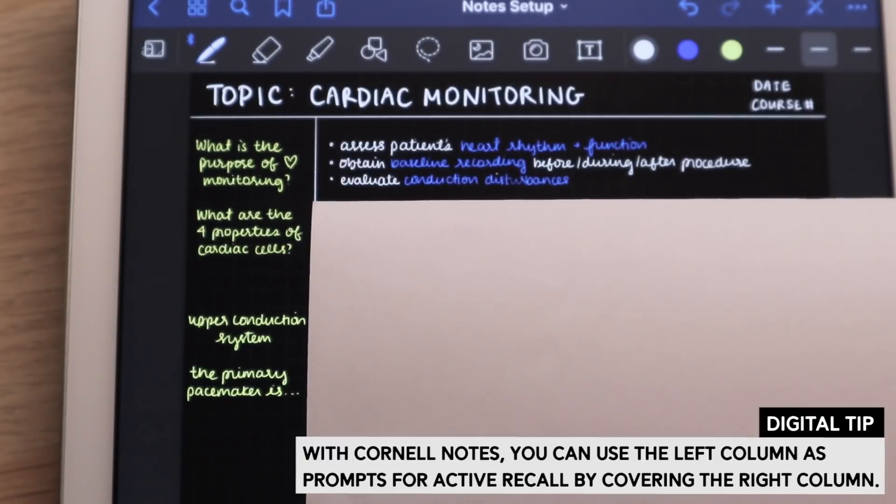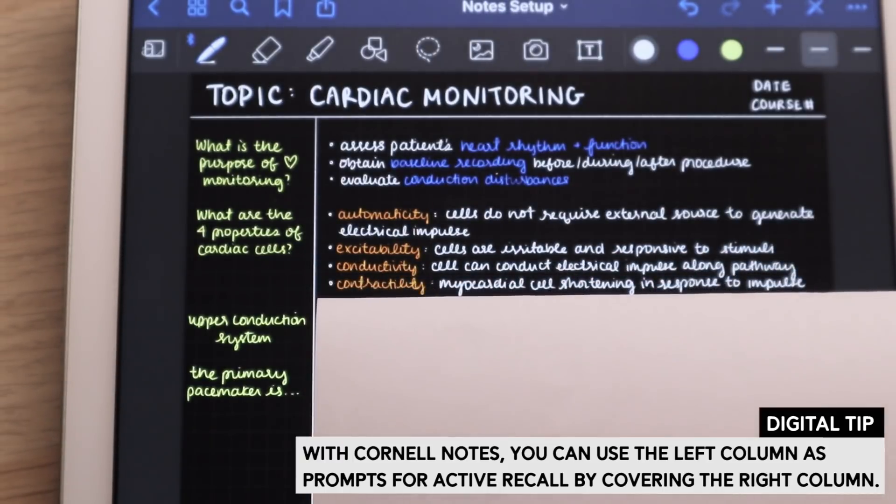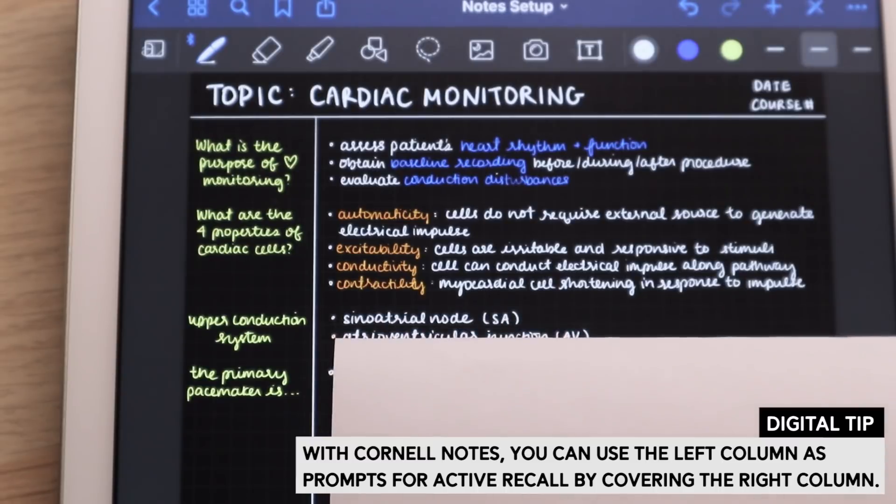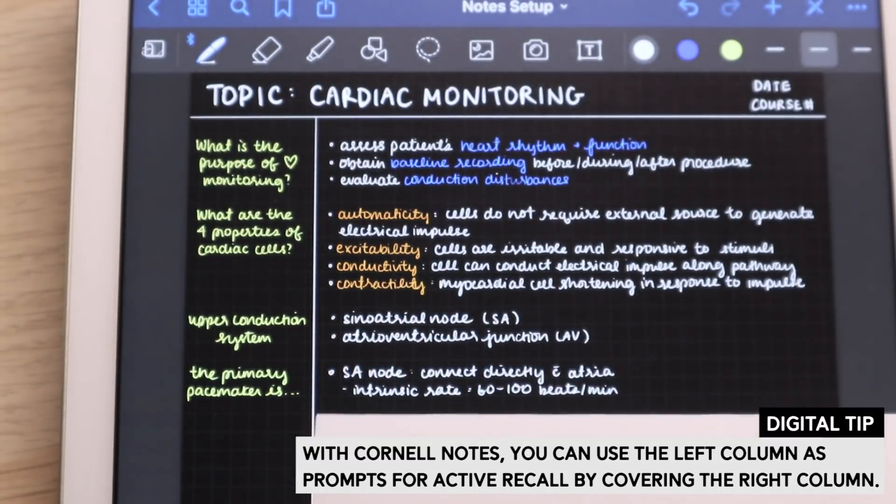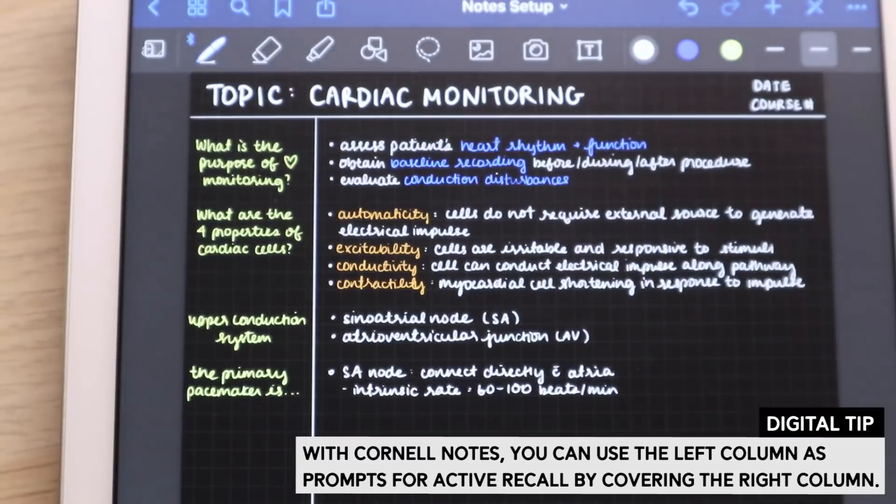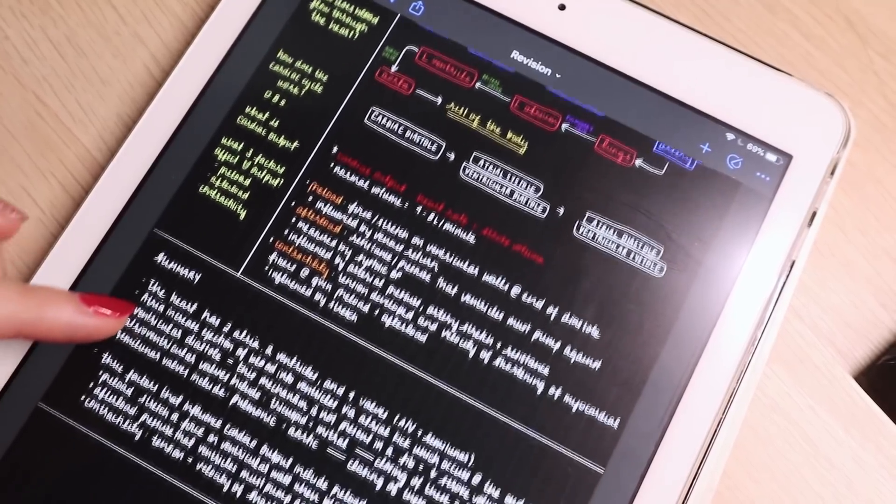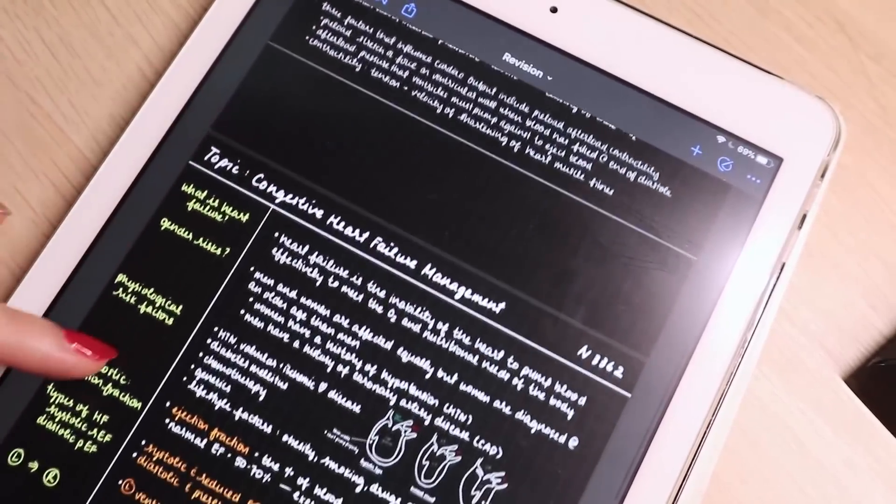So a neat trick is that if you have prompting questions in the first column, you can actually cover the notes on the side to test yourself when you're reviewing to see if you know the answers to these questions. So you can definitely take advantage of the active recall element in this system.